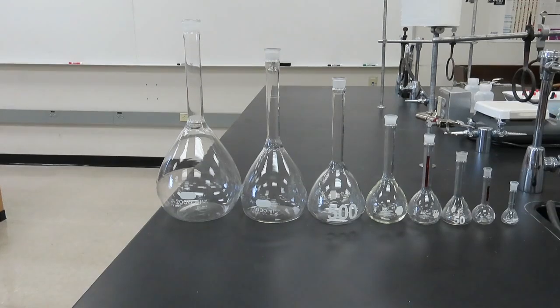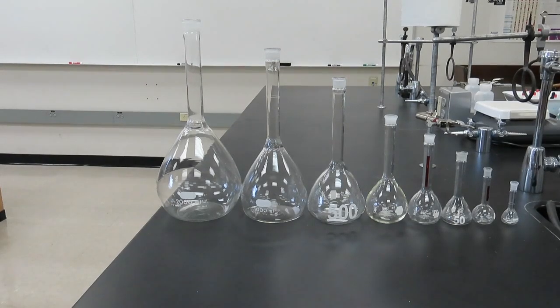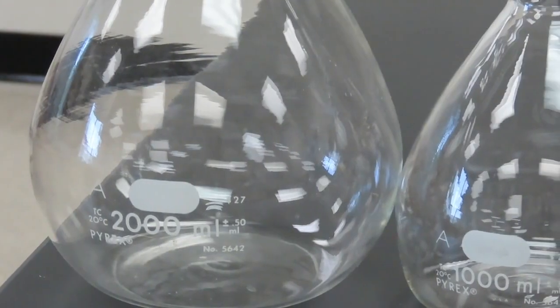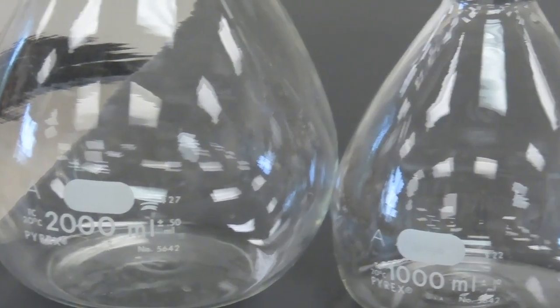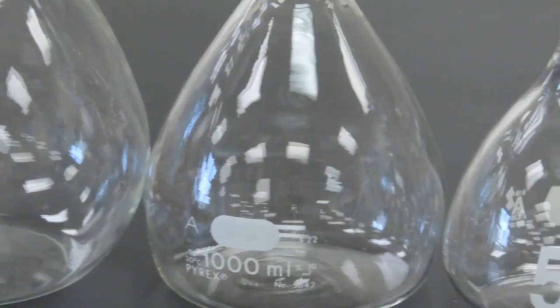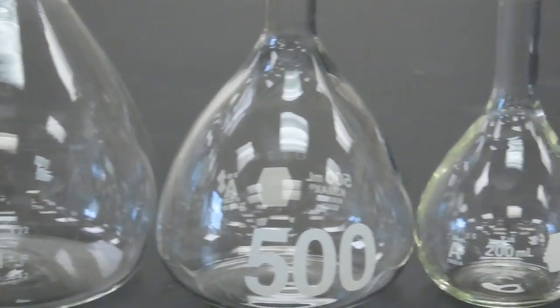Volumetric flasks are the ideal solution when preparing a liquid solution with a specific final volume. They come in many sizes, ranging all the way from the large 2000 milliliter down to the tiny 10 milliliter.